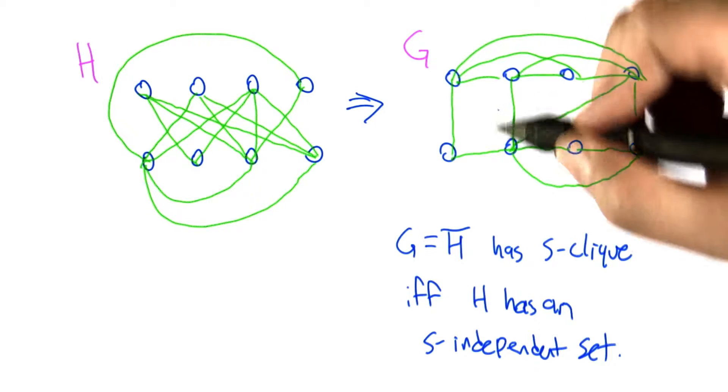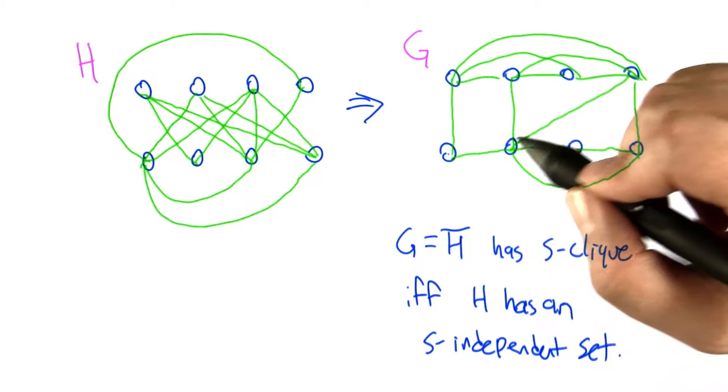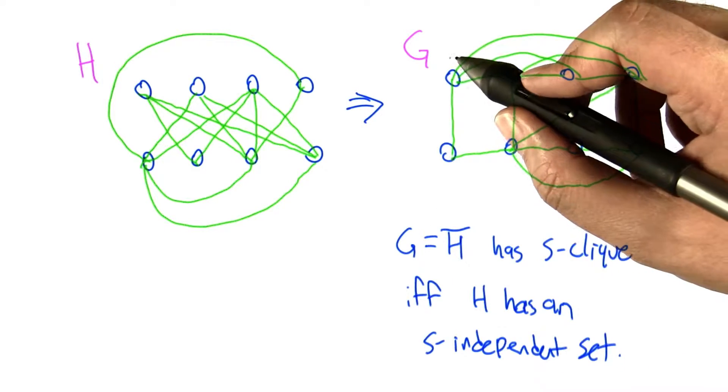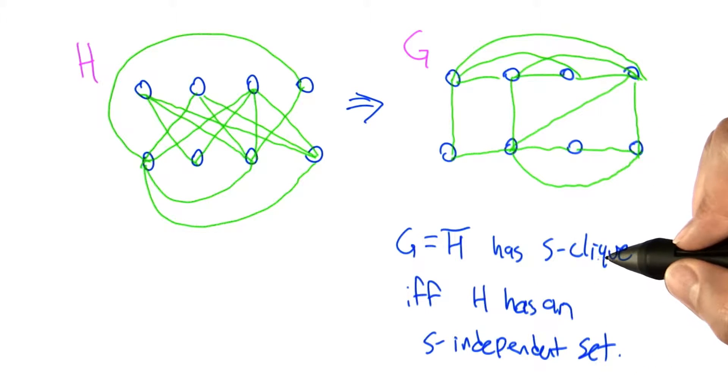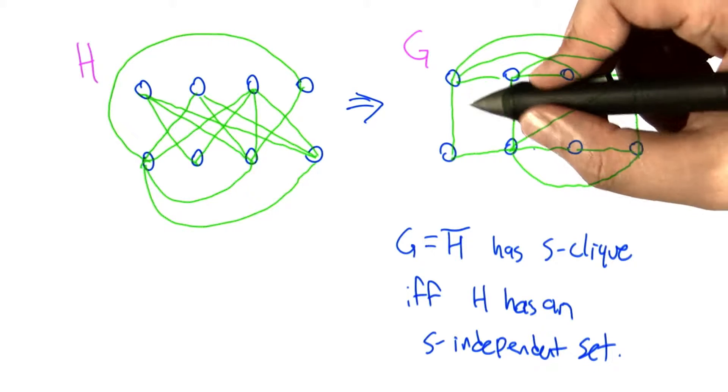We've carefully constructed this complement graph G. The thing that you need to realize now is that G, this new graph, which is the complement of H, has an S-clique if and only if H has an S-independent set. In fact, it's the same set of nodes.